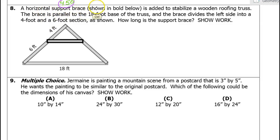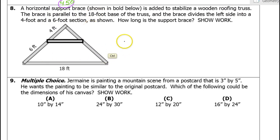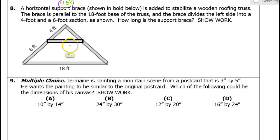A horizontal support brace, shown in bold, is added to stabilize a wooden roofing truss. The brace is parallel to the 18-foot base of the truss, and the brace divides the left side into a 4-foot and a 6-foot section as shown. How long is the support brace?